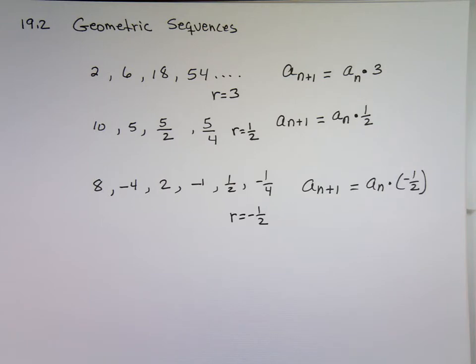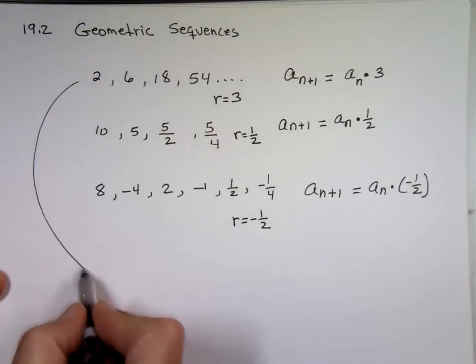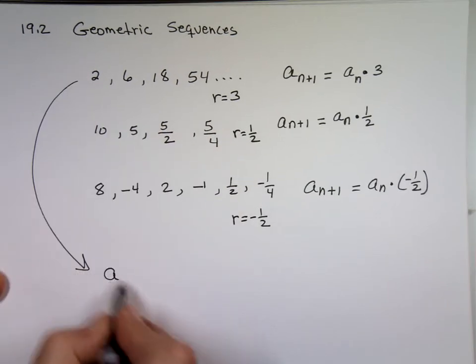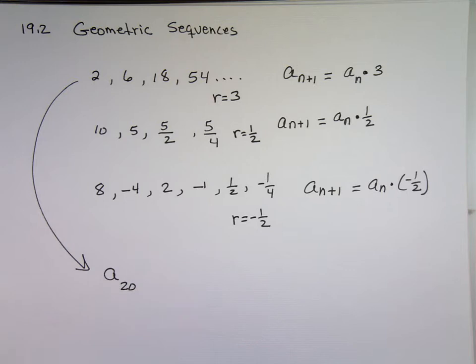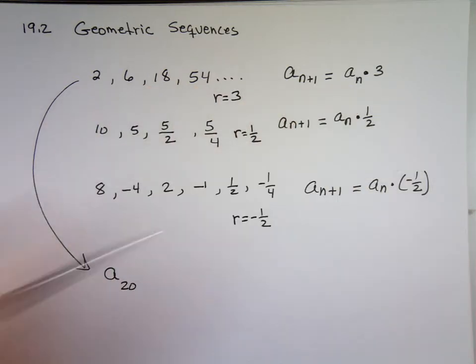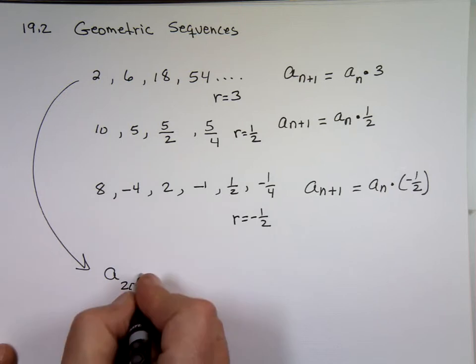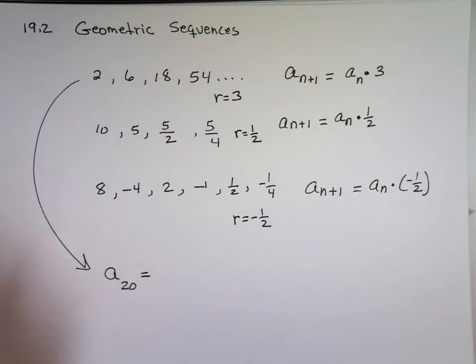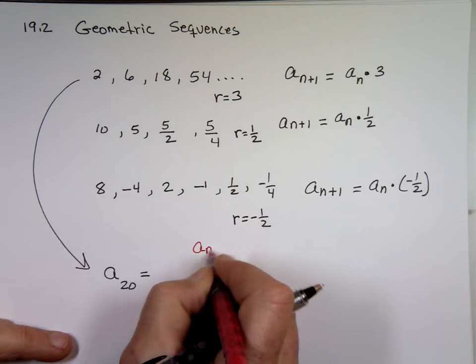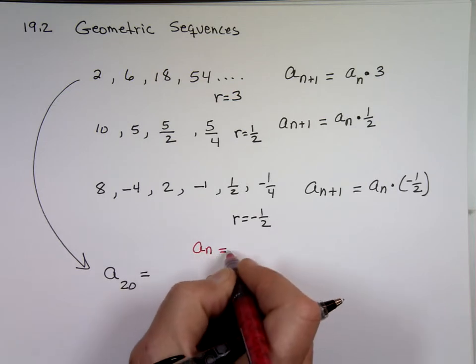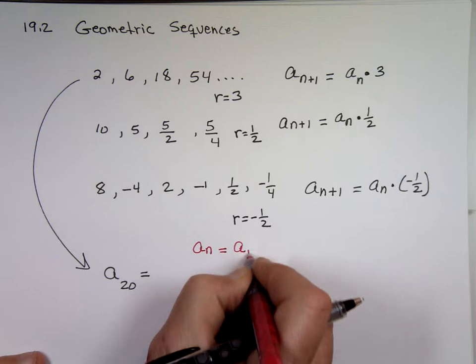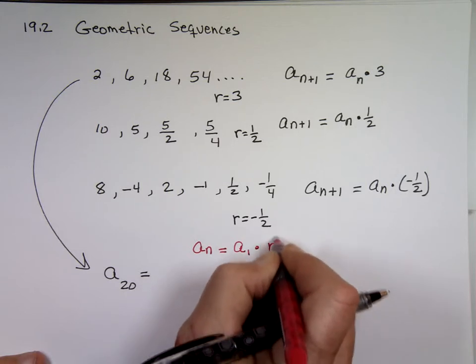Now, if I said to you, let's take the top one here, and I said, can you tell me what the 20th number is? Again, I can go through that and list them all to get the 20th number, or I can look for a shortcut. We do have a shortcut. It says if you want to find the nth number, it's always going to be the first number times R to the power of n minus one.